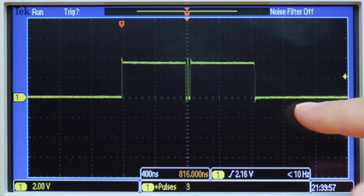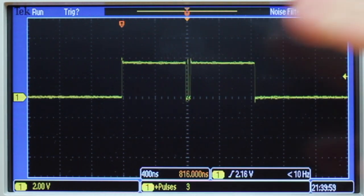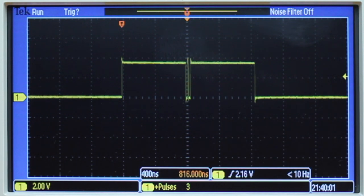Here in the Tektronix, we can see the triple pulse action. We're counting three pulses and we see the two pulses with the one really short pulse in the center.